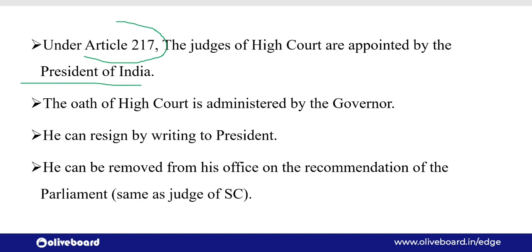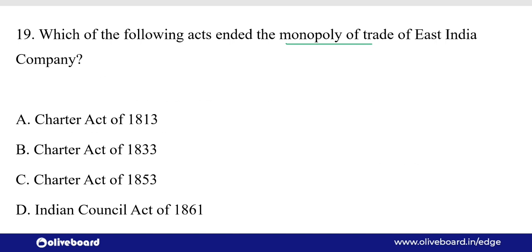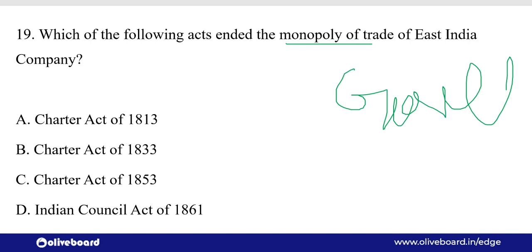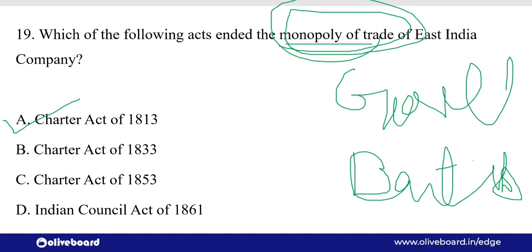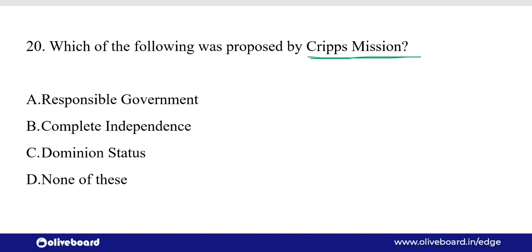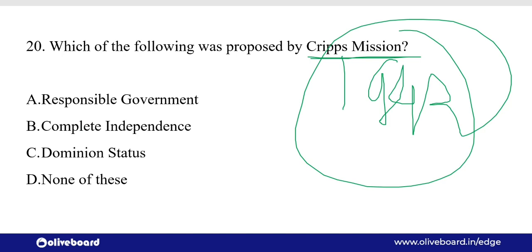Which of the following acts ended the monopoly of trade of East India Company? वो है Charter Act of 1813। Which of the following was proposed by Cripps Mission? Cripps Mission 1942 में आया था, और इसके head थे Stafford Cripps — उन्हीं के नाम पर इस mission का नाम रखा गया। इनका main मकसद यह था कि India का cooperation चाहिए था Second World War में, और उसके बदले में इन्होंने कहा था कि जब war खत्म हो जाएगा, then we will provide you with a dominion status।